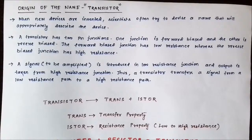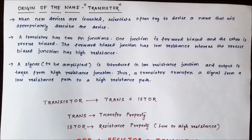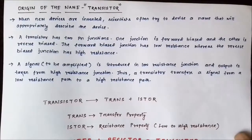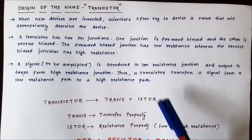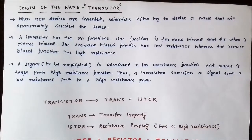This electronic device called a transistor is always used for signal amplification — that is its main use. The common emitter mode is commonly used, which we will discuss in future videos. The key principle is that the weak signal to be amplified is introduced at the low-resistance junction, which is the emitter-base or input junction, and the output is taken from the collector-base or high-resistance junction.